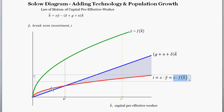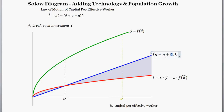The blue line is our break-even investment line. In order to keep capital per effective worker constant, you need to produce additional capital to account for depreciation, population growth, and technology growth. If you have a high level of capital per effective worker, your break-even investment amount is relatively high because a large portion is depreciated away, plus there's population and knowledge growth. Similarly, at a low level of capital per effective worker, the break-even investment line is low, since you don't need to produce as much to keep that capital stock constant.